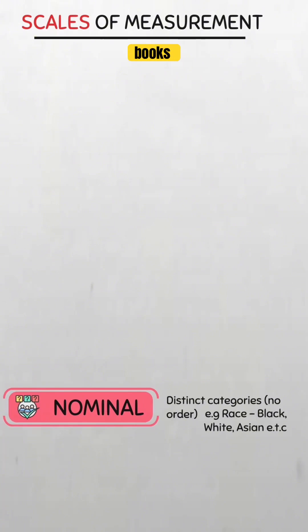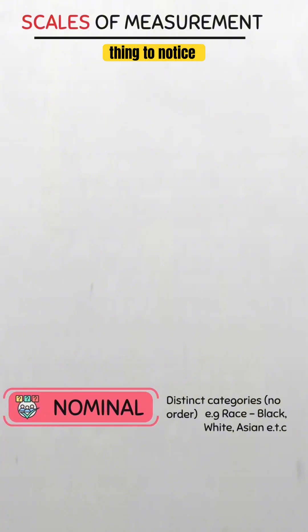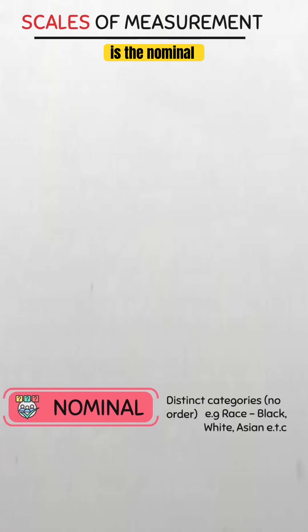It's like sorting books by genre — we have fiction, history, science, etc. The important thing to notice is that though each category is unique, none is greater than the other. This is the nominal scale: just distinct categories and no order.